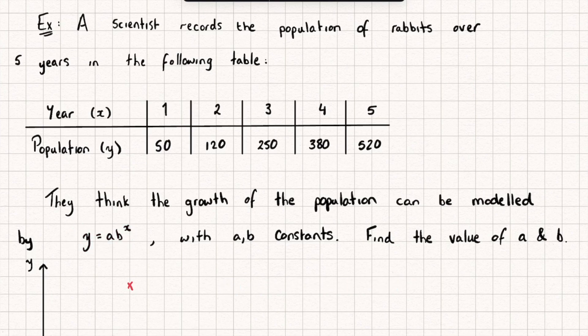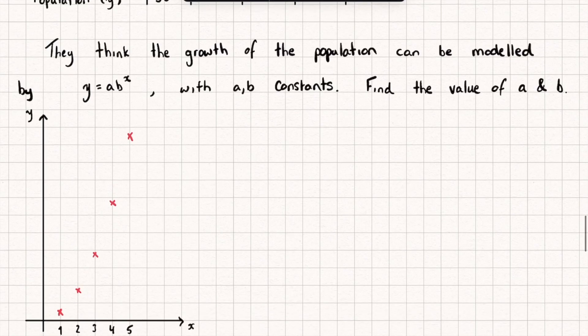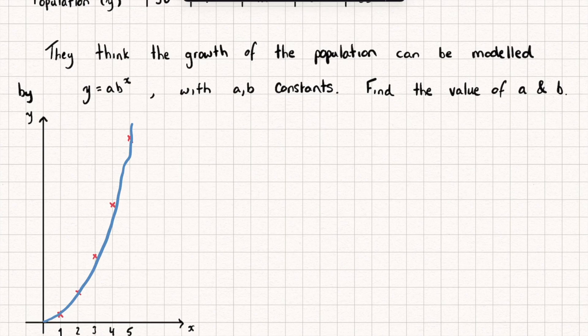If we plot the data values on a graph it looks something like this, and you can see why they think this follows an exponential equation — if I draw a curve of best fit it looks like an exponential graph. We could maybe guess values of a and b but that could take ages and it's not a very accurate method.